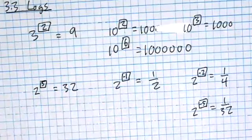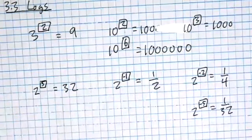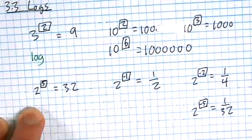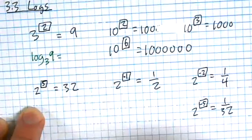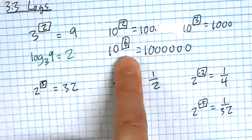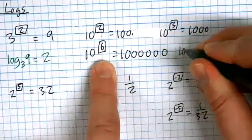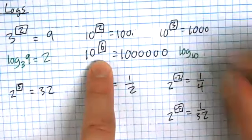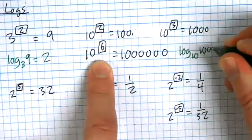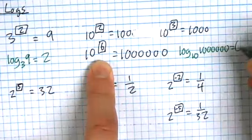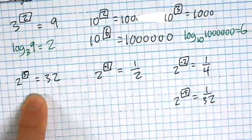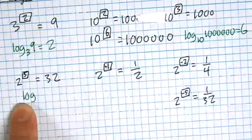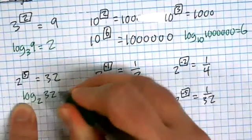I'm going to go back and rephrase all these same questions with different notation. Just look up here for a second. What exponent could I put onto a base of three to make it equal to nine? We said the answer was two. What exponent onto a base of ten to make it one million? We said six. What exponent onto a base of two to make it equal to 32? The answer is five.